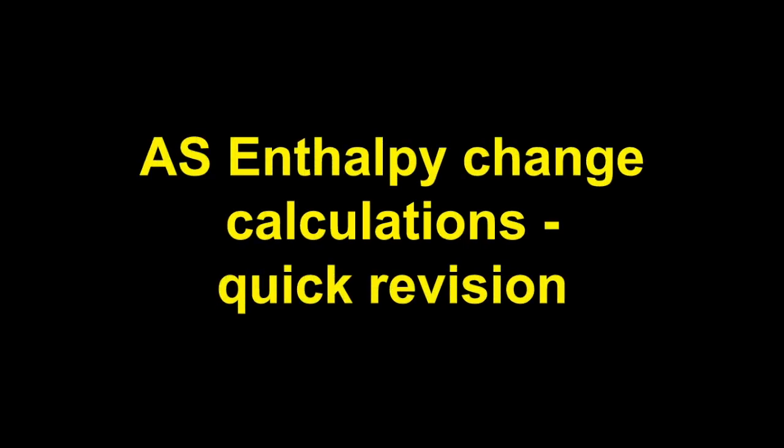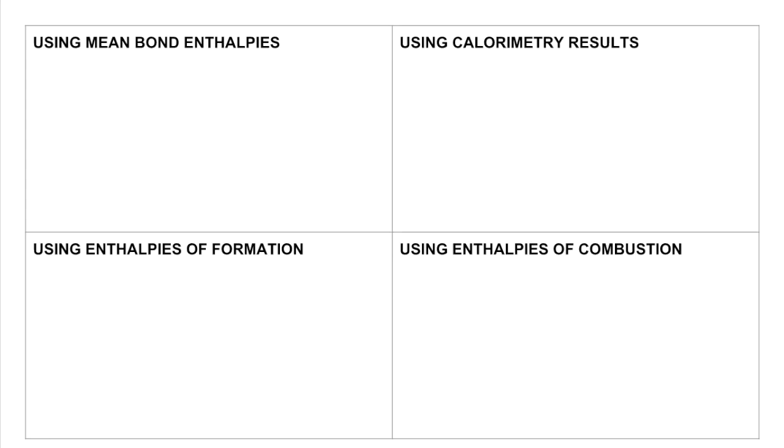I've got a really quick revision video here for the AS enthalpy change calculations. So I'm breaking it into four sections: using mean bond enthalpies, using calorimetry results, using enthalpies of formation, and using enthalpies of combustion.